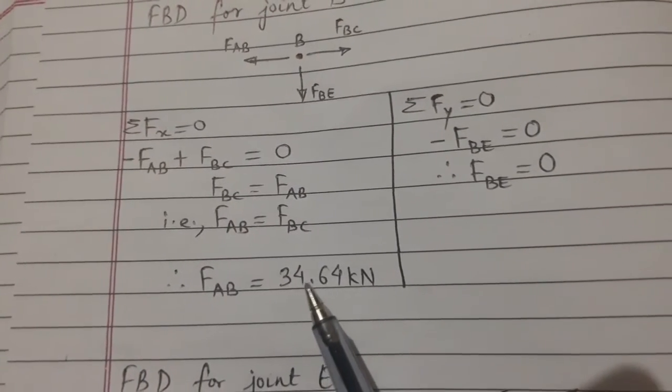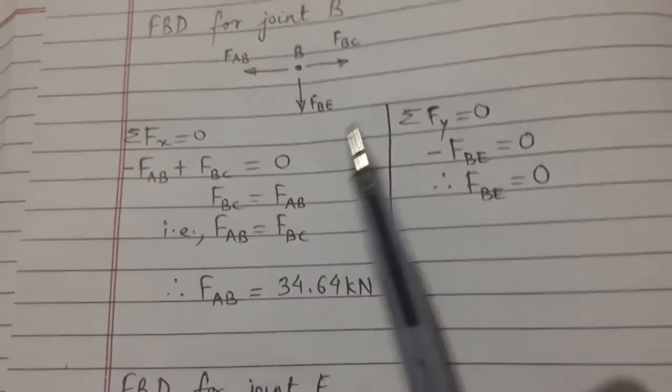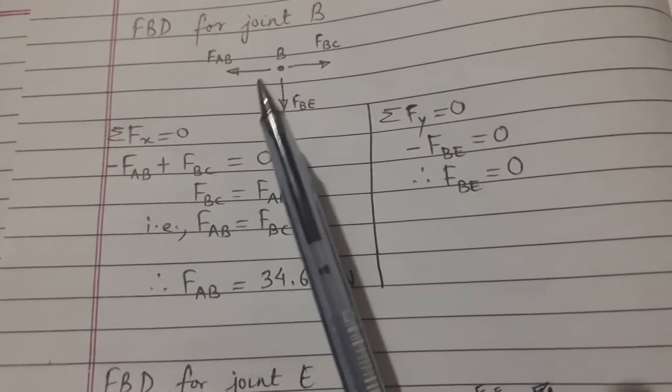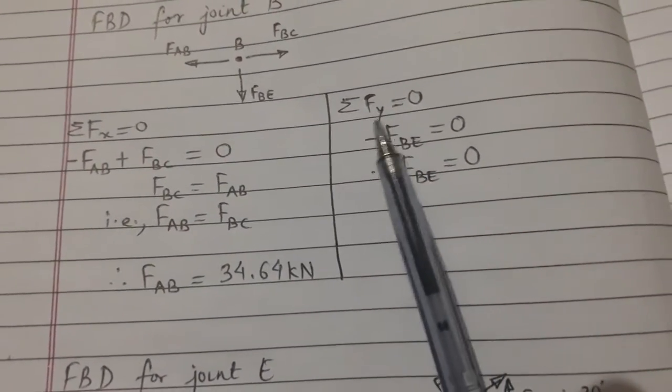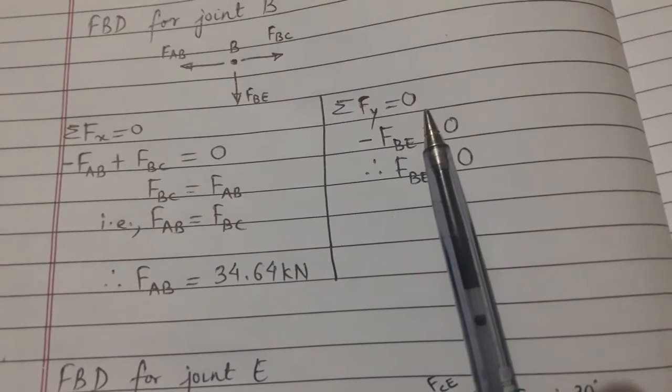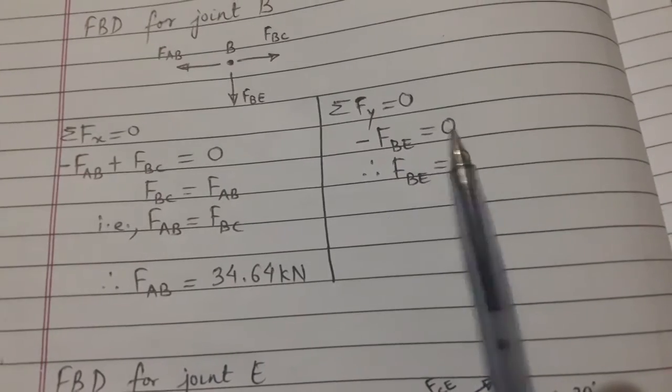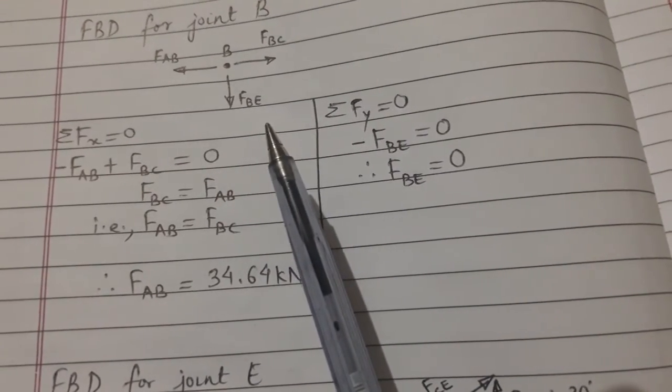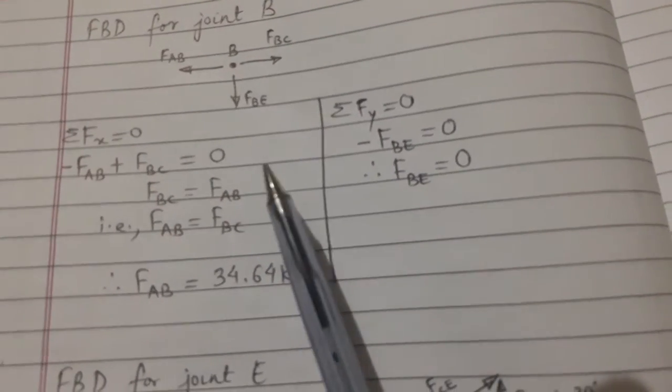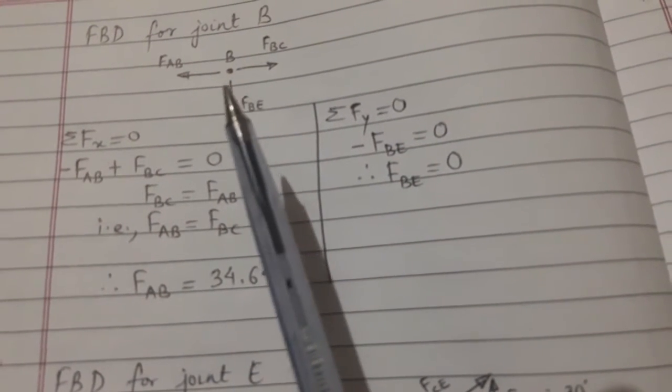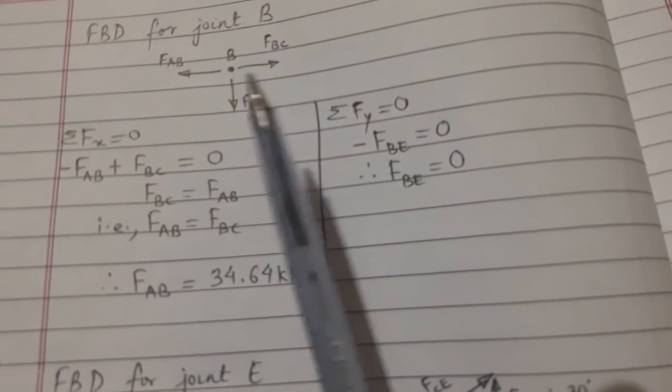FBC value we already got as 34.64 kN with positive sign, so FAB is also positive 34.64 kN. That's why the assumption here, FAB is away from point B, is correct. Summation of Fy is equal to zero, and we have minus FBE equal to zero because it is towards downside. Therefore FBE is equal to zero.